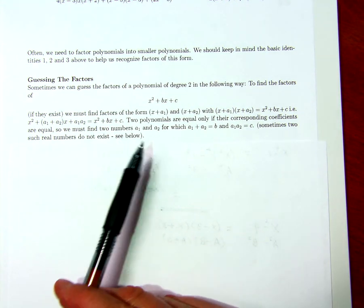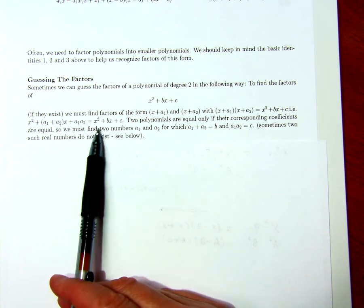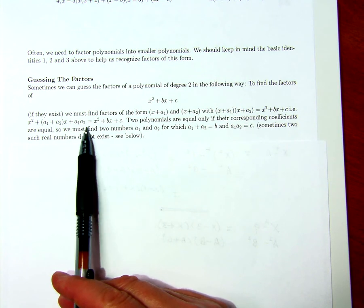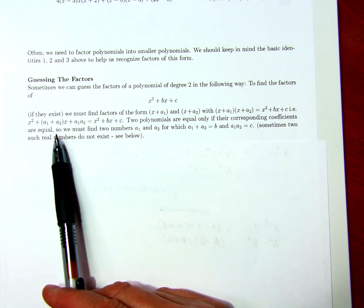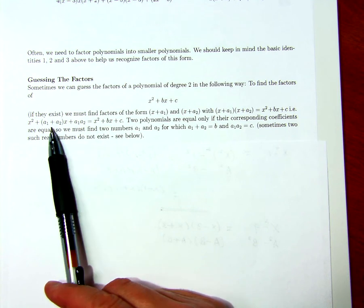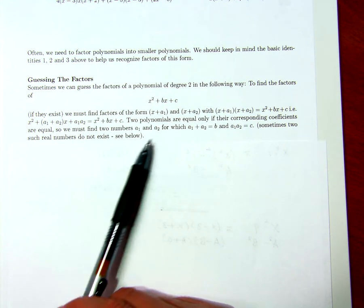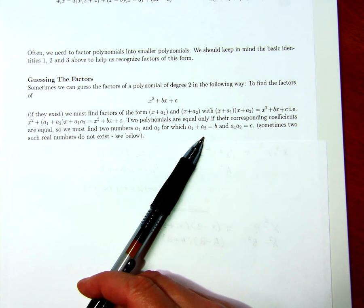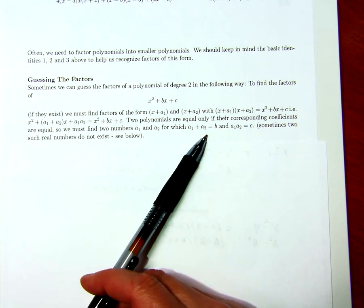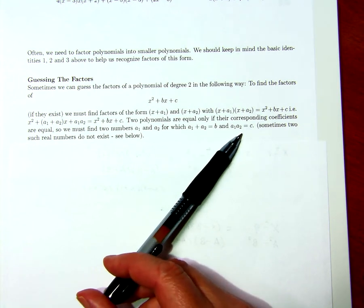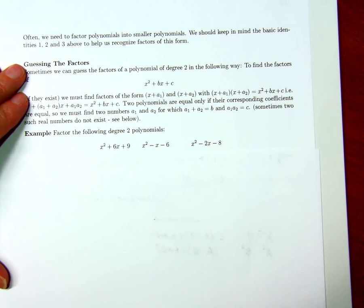That can only happen if b equals a1 plus a2 and c equals a1 times a2. So if we can find an a1 and a2 so that a1 plus a2 is b and a1 times a2 is c, then we have our factors for the polynomial of degree 2, or the quadratic.